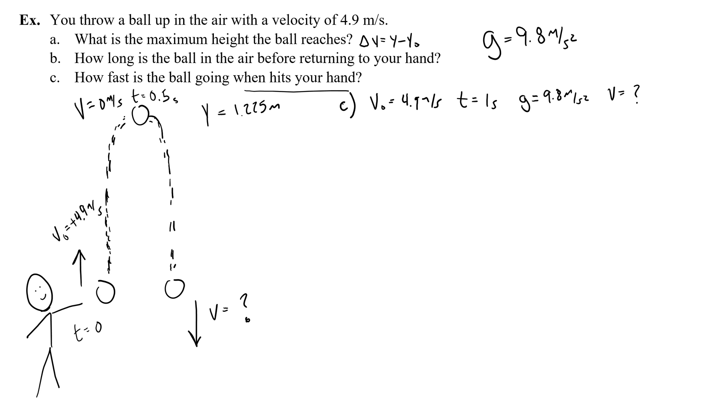So I want to solve for the final velocity, and it's already on the left, so I don't need to rearrange anything in the equation. So I'll plug in negative 9.8 meters per second squared times 1 second plus 4.9 meters per second. So that's going to be, the seconds cancel, 1 in the second squared, so negative 9.8 meters per second, negative 9.8 plus 4.9 meters per second, which is going to give you negative 4.9 meters per second.